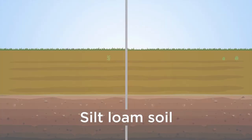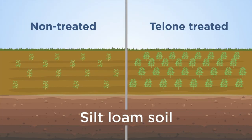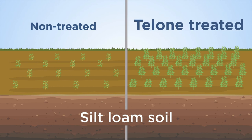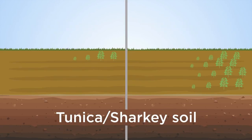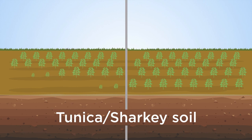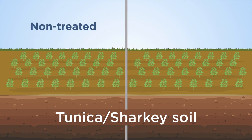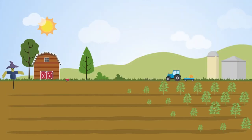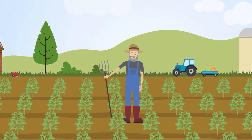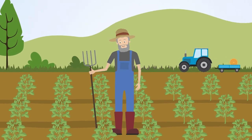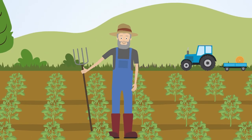Results indicated that in areas where the soil textures favored root-knot nematodes, telone treatment significantly improved soybean yield. However, nematicide application did not affect yield where soil type did not favor the nematode. Therefore, site-specific applications of telone can be used to control root-knot nematode and maintain high soybean yield.